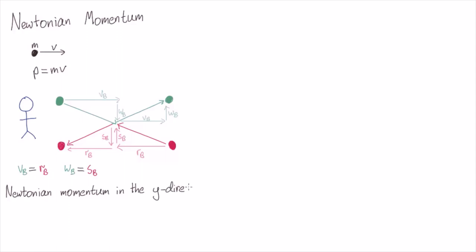Let's look at Newtonian momentum conservation in the y direction. So before the collision, the green ball is coming downwards with speed wb, and the pink ball is coming upwards with speed sb.